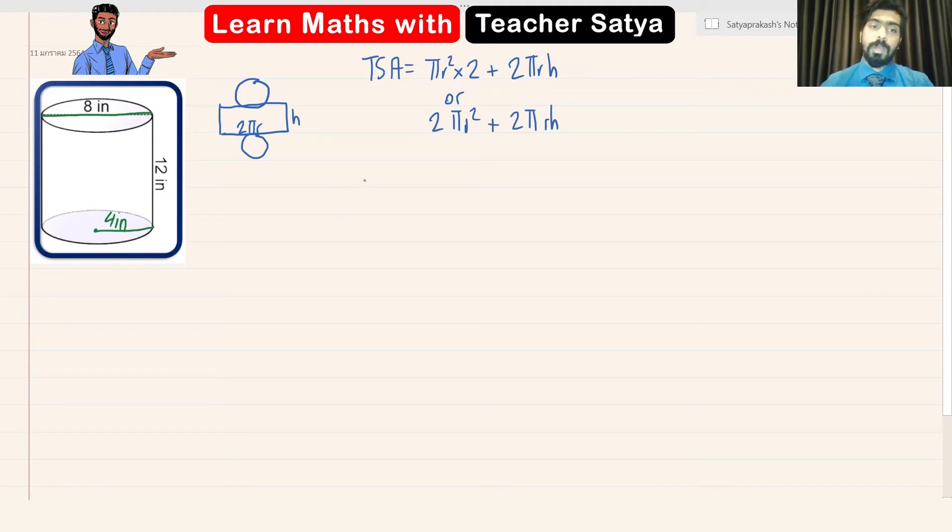Now let's take these values and put it in the formula. So we have two times pi times r square, which is four to the power of two, plus two times pi times r, which is equal to four, multiplied by the height, which is equal to ten. Right, guys?